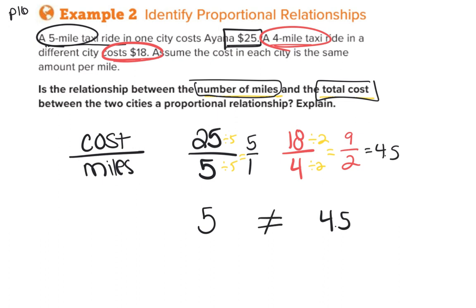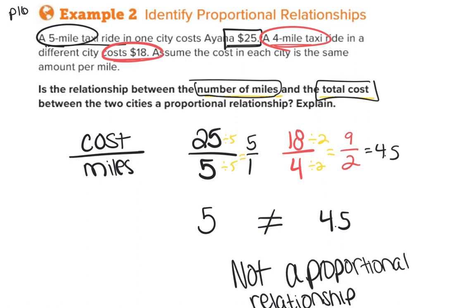Because these two numbers are not the same. This is not a proportional relationship. And when you think about what that means, in terms of this problem, it's saying in the first city, it basically cost $5 per mile to ride. And in the second city, this is like $4.50 per mile. So again, it's not the same in each city. So this is not a proportional relationship.